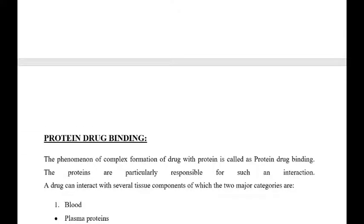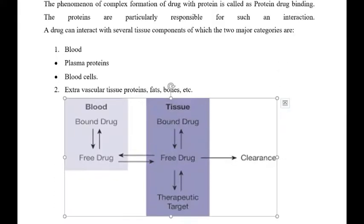Let us start with what is protein drug binding. The phenomenon of complex formation of a drug with a protein is called protein drug binding. The proteins are particularly responsible for such an interaction. A drug can interact with several tissue components, of which the major two categories are blood — which includes plasma proteins and blood cells (red blood cells, white blood cells, and platelets) — and the component of blood without blood cells is known as plasma. The next category is extravascular tissue proteins that contain fats and bones, as our body consists of many proteins. So protein drug binding, in other words, is the physiological distribution of the drug in the body, which will be discussed in this chapter.